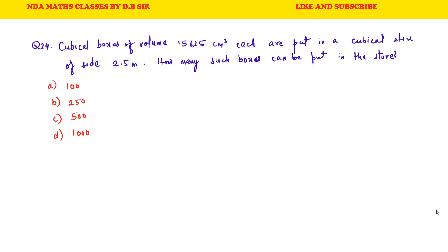Cubical boxes of volume 15,625 cubic centimeters each are put in a cubicle store of side 2.5 meters. How many such boxes can be put in the store?